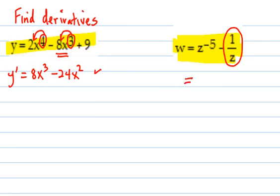So this is w equals z to the negative 5 minus z to the negative 1. Then you can use that power rule.